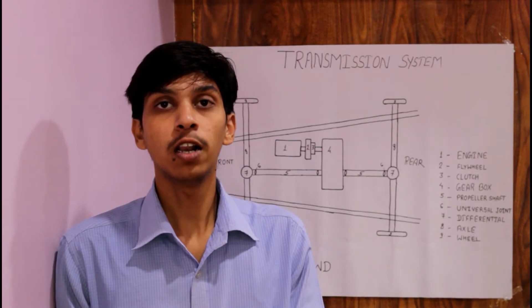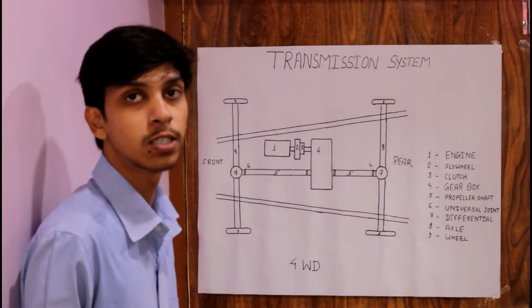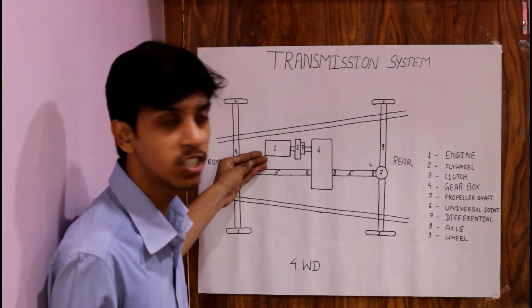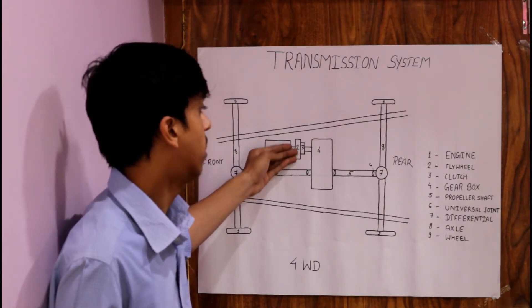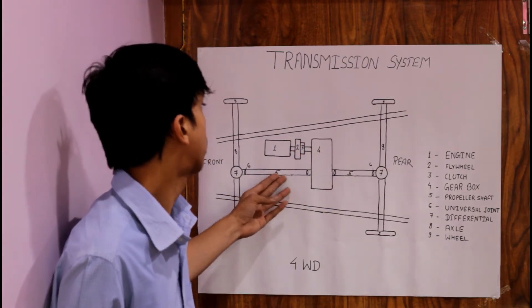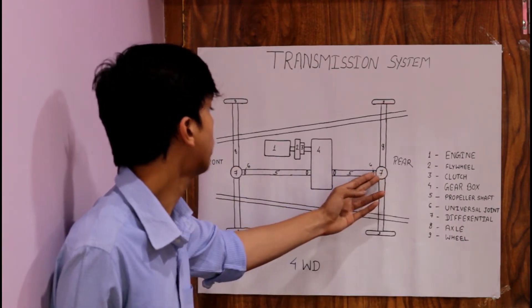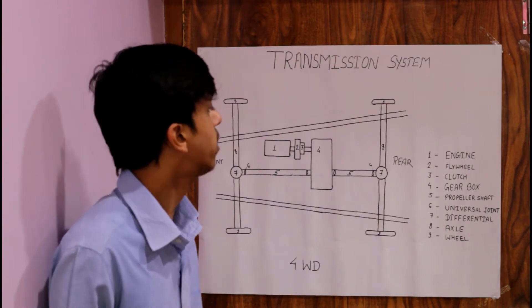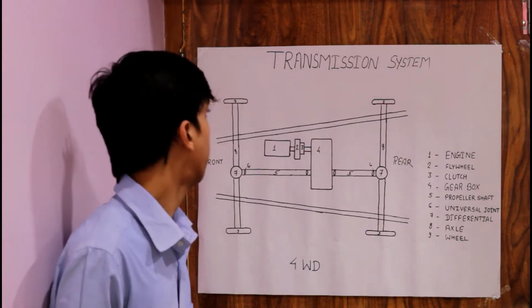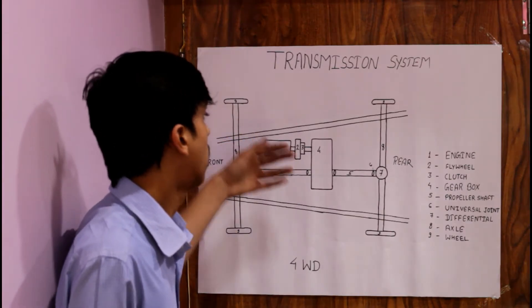The transmission system is the system through which our vehicles move from one place to another. The transmission system basically consists of these parts: first is an engine, second is a flywheel, third is a clutch, fourth is a gearbox, fifth is a propeller shaft, sixth is universal joints, seventh is a differential, eighth is an axle, and ninth is the wheel.